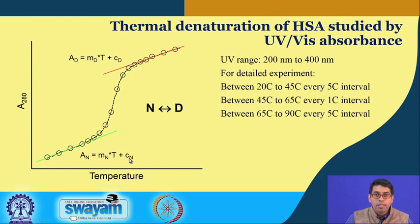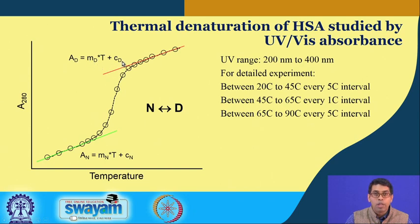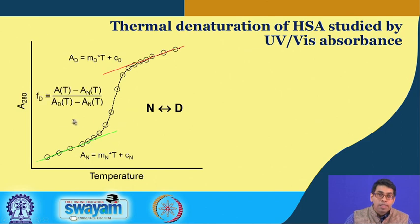Once we determine m and c, we know how the absorbance of the native state depends on temperature and can calculate it at any temperature. Similarly, fitting the high-temperature data points to a straight line gives the dependence of the absorbance of the denatured state on temperature, with its own slope and y-intercept constants. Once we have these two equations, we can determine the fraction of the denatured state present at any point.